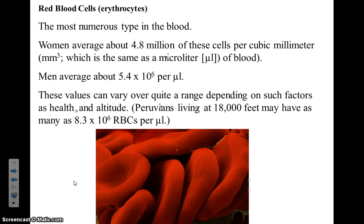Of the formed elements, red blood cells are the most numerous. Women average about five million of these cells in a cubic millimeter of blood.